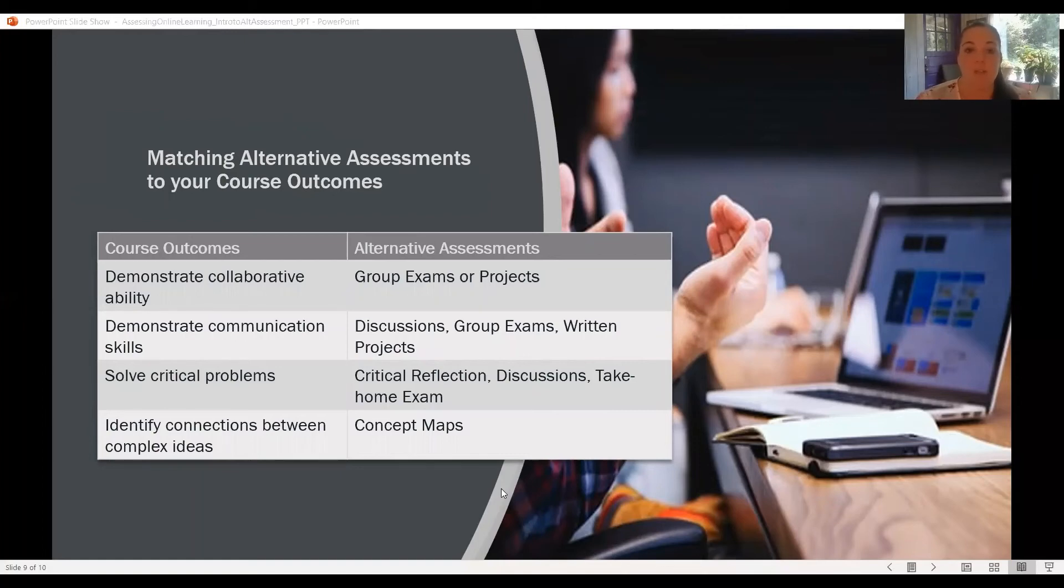If you're wanting to see students demonstrate their collaborative ability, you might choose to assign a group exam or a group project. If you're wanting students to demonstrate their communication skills, a discussion, a group exam, or even a written project would be appropriate. If you're wanting students to solve critical problems, you could use a critical reflection, a discussion, or a take-home exam. And then if you're wanting students to identify connections between complex ideas within your course, perhaps you ask them to develop a concept map.